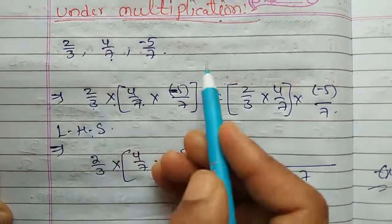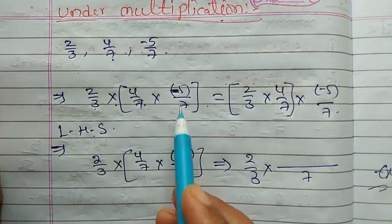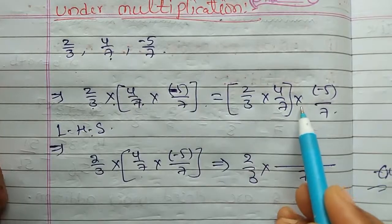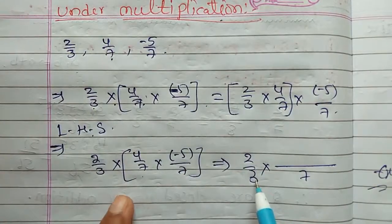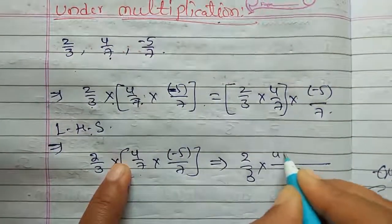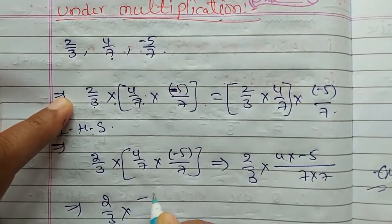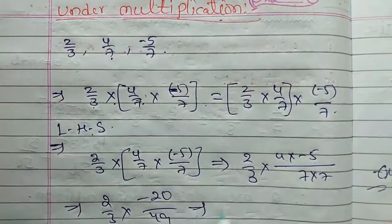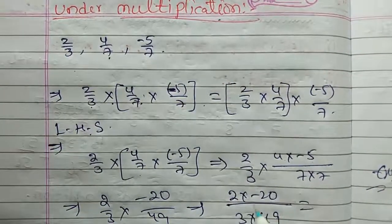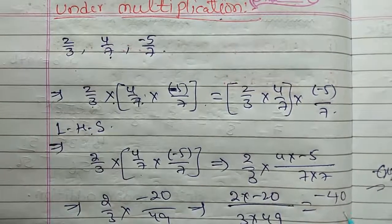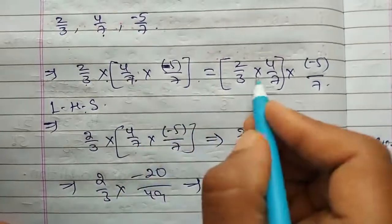Now, associative property under multiplication. For example, 2/3, 4/7, and −5/7. LHS: (2/3 × 4/7) × (−5/7). First, 4/7 × (−5/7): product of numerators by product of denominators = (4 × −5)/(7 × 7) = −20/49. Then 2/3 × (−20/49) = −40/147. So LHS = −40/147.